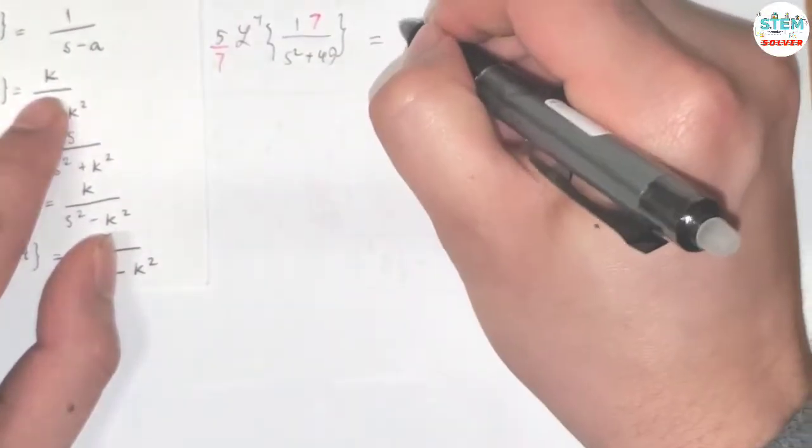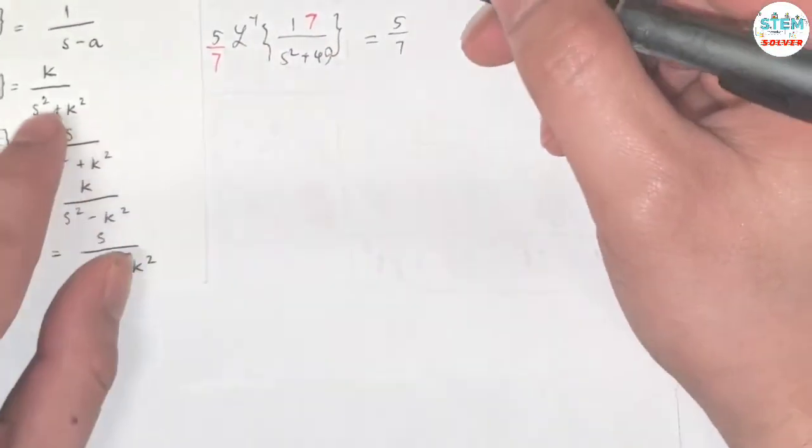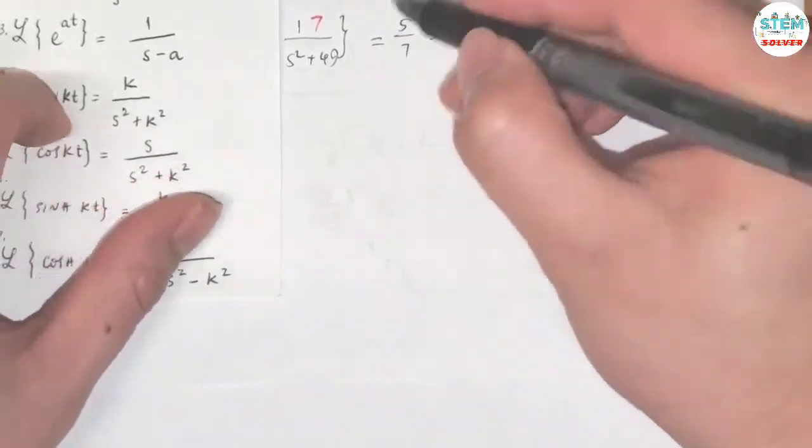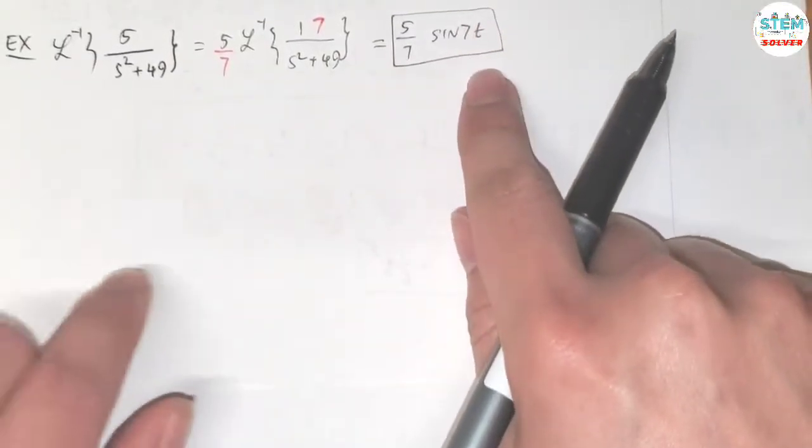So I have 5 over 7 times L inverse of 7 over x square plus 49, which gives me sine of 7t.